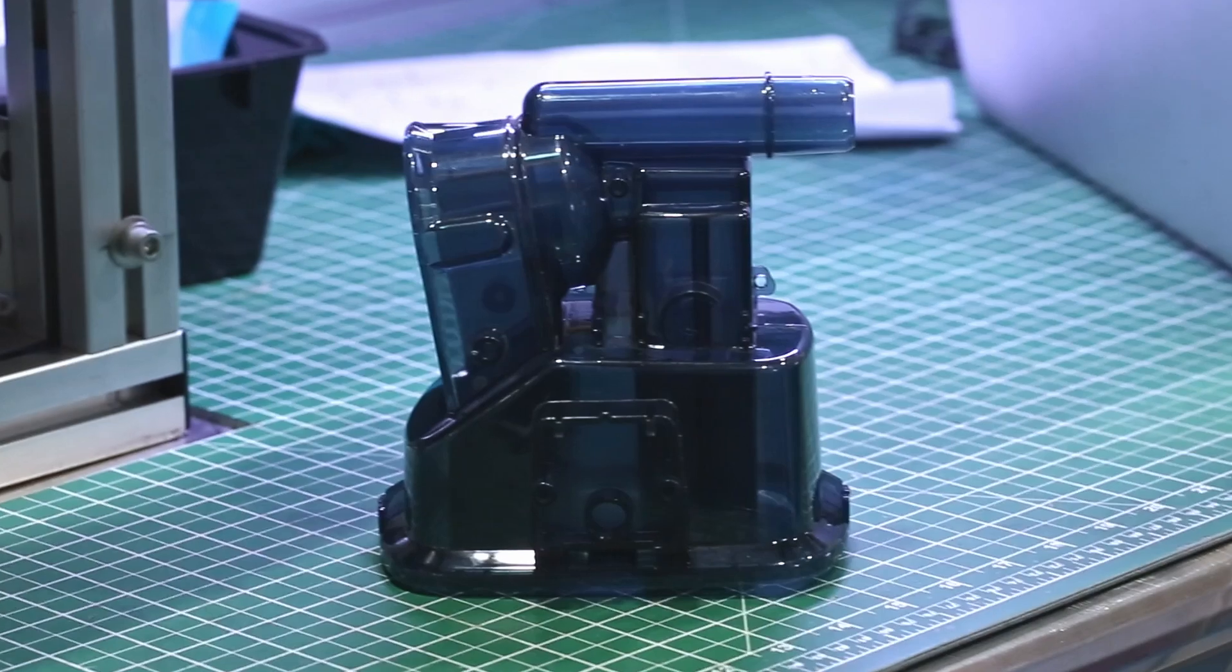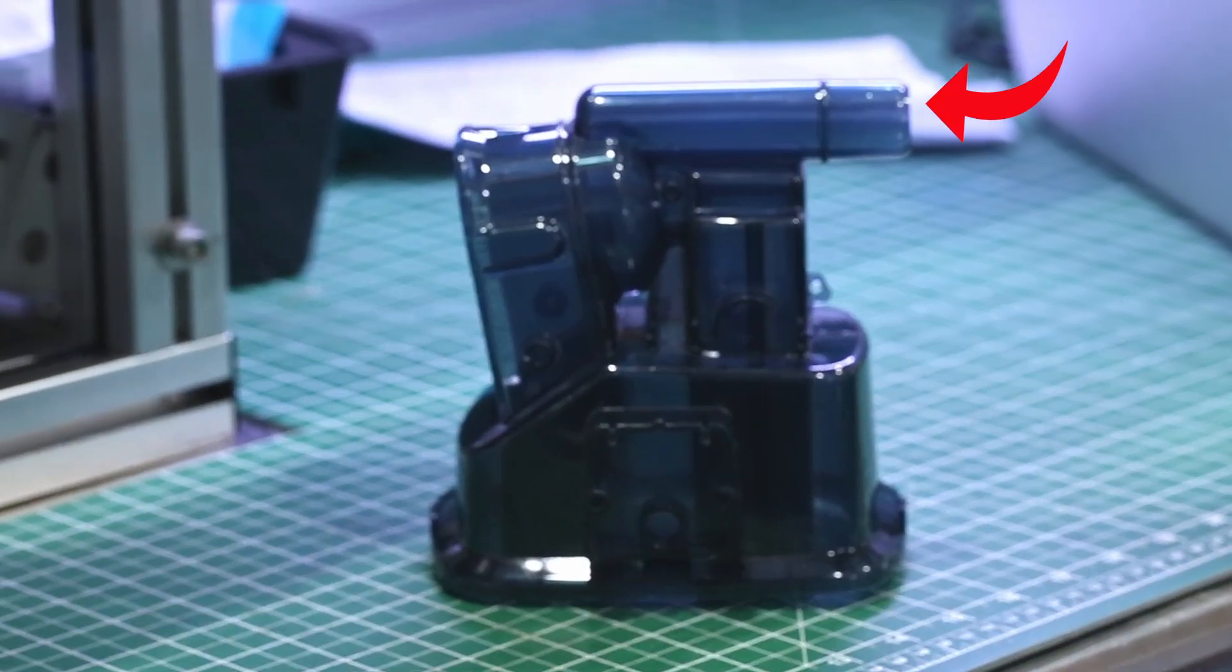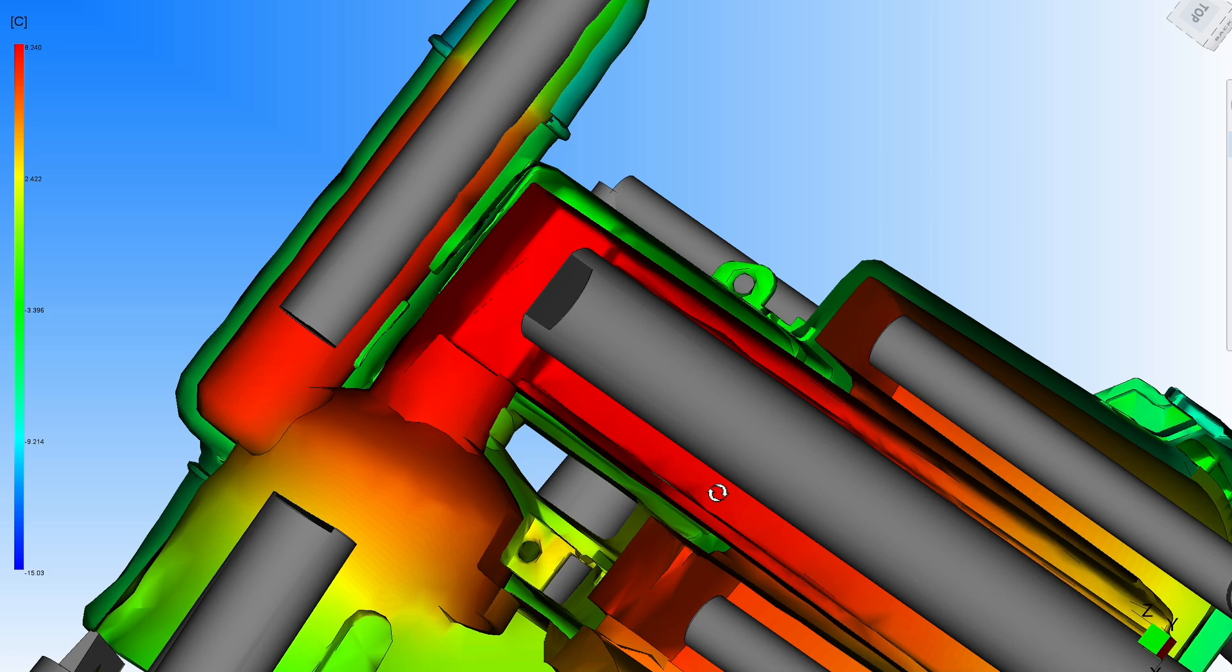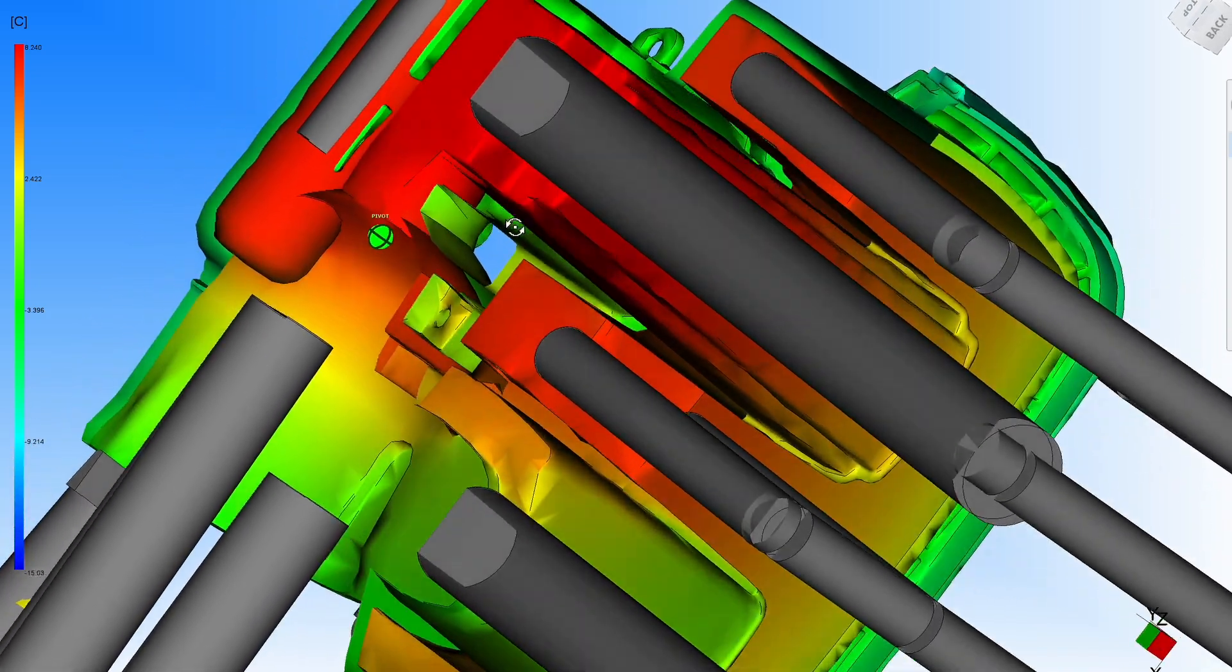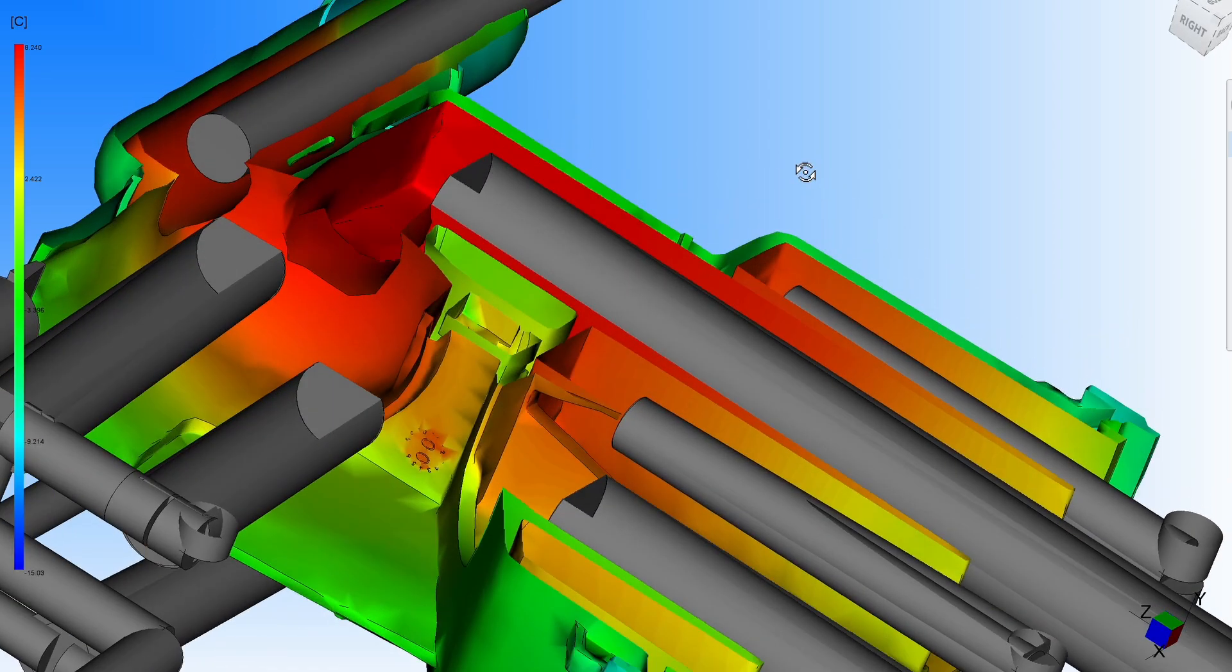Speaking of inserts, we had to design a couple more. In addition to this face, there's also the long feed tube here that needs an insert. In addition, you can see how challenging it is to get cooling circuits into this area without interfering with the gate and runner system for the resin or the ejector pins.